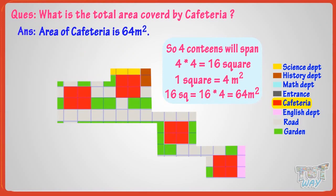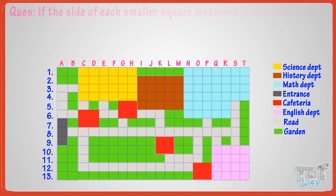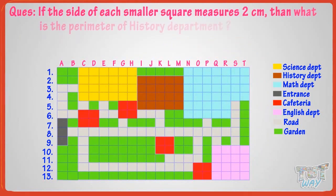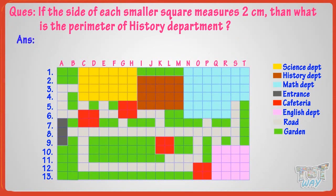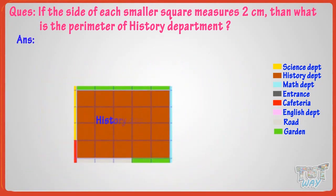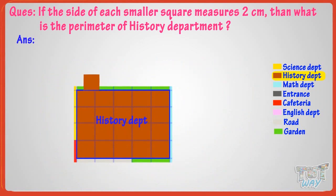Now, let's move on to another question. If the side of each small square measures 2 centimeters, then what is the parameter of history department? Let's calculate the parameter of history department. We know, parameter is the length of boundary of a closed figure. Length of side of each square is 2 centimeters.